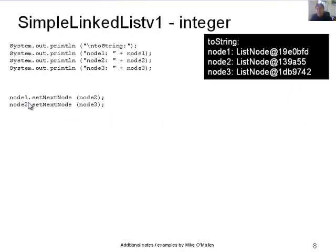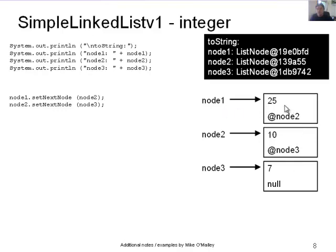We can use the setNextNode method: node1.setNextNode(node2) and node2.setNextNode(node3). So node1's next node is now node2, and node2's next node is now node3. This links the nodes together so we can traverse the list. Node1 still has data 25 with a reference to node2, node2 has data 10 with a reference to node3, and node3's next node is still null.